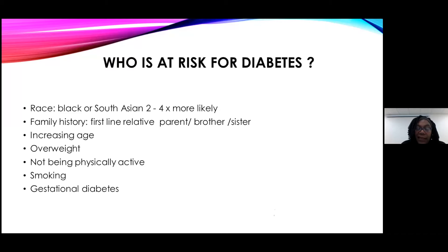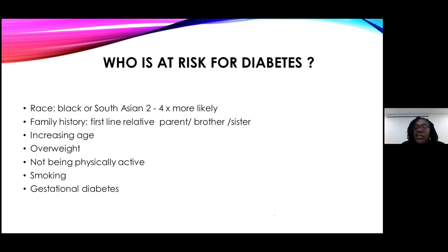Smoking, because of the constrictions it causes with the blood vessels - anything that is going to affect the flow of blood to the kidney is going to cause a risk of renal failure. Also, if you had gestational diabetes - diabetes in pregnancy - you are more likely to develop diabetes later on in life.